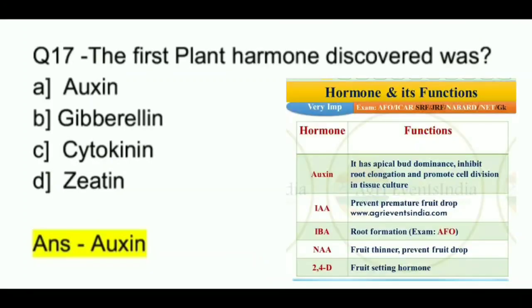Question 17. The first plant hormone discovered was? A. Auxin. B. Gibberellin. C. Cytokinin. D. Zeatin. And the answer is Auxin.